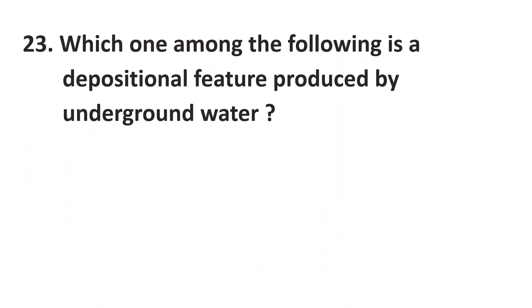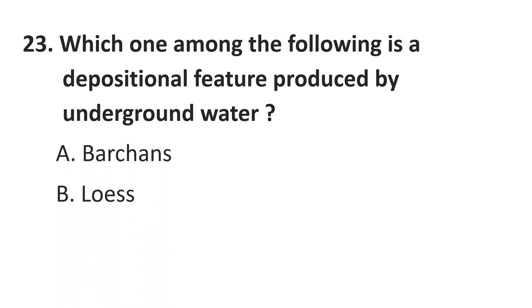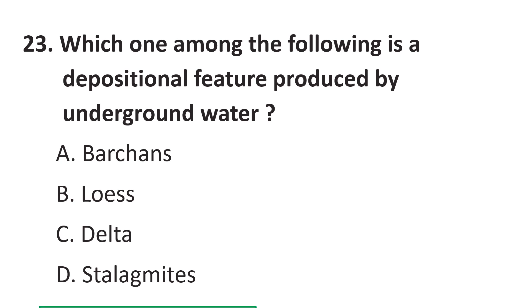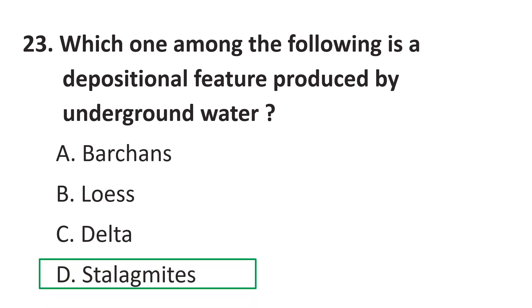Question 23: Which one of the following is a deposition feature produced by underground water? Choices are: A) Perched lake, B) Louis, C) Delta, D) Stalagmites. The correct answer is D) Stalagmites.